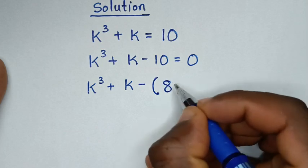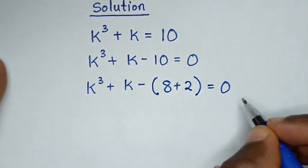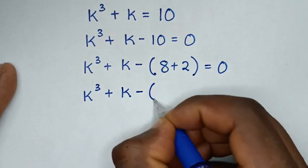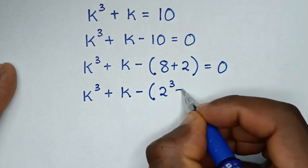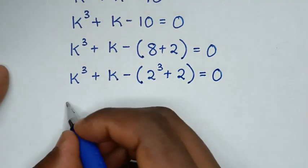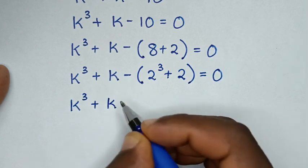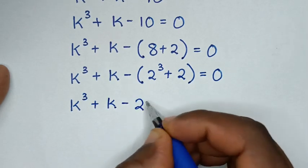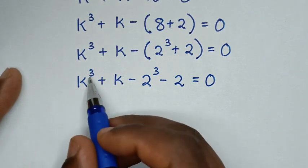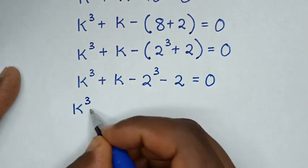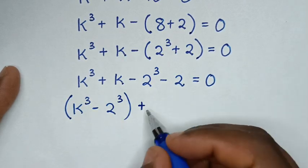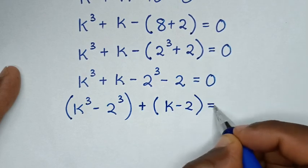So, 10 is the same as 8 plus 2, bracket equals 0. Then it will be k power 3 plus k, minus bracket — 8 is the same as 2 power 3, then plus 2 — bracket equals 0. Taking the negative inside the bracket: minus 2 power 3, minus 2, equals 0. Placing like powers together: k power 3 minus 2 power 3, bracket, then plus bracket k minus 2, bracket equals 0.